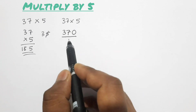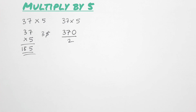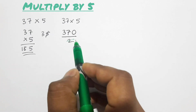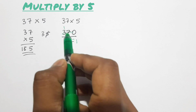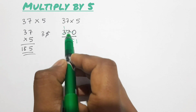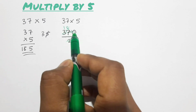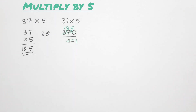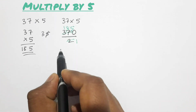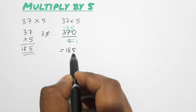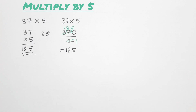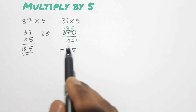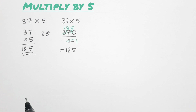So let's divide 370 by 2: 2×1 is 2, 2×8 is 16, carry 1, gives 15, 2×5 is 10. So the answer is 185. We can see that both methods take almost equal time, so this shortcut method is more beneficial when we are multiplying a large number.